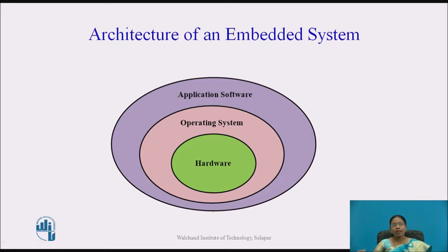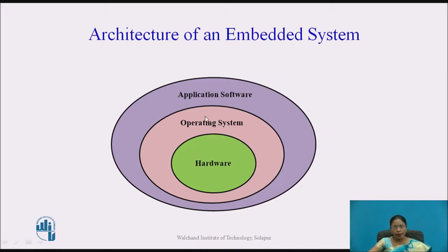This is the architecture of an embedded system. Here you can see there is hardware. For using this hardware we need some software, and for that software we need the operating system and application software. This is the part of the software architecture — hardware architecture has already been discussed. We will now look at the software architecture, starting with the operating system.